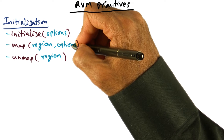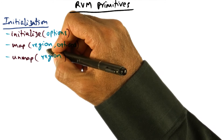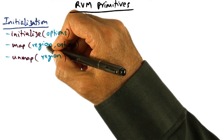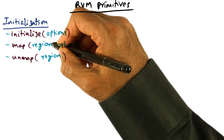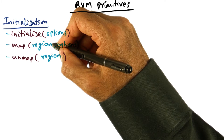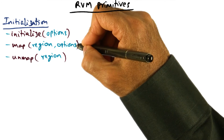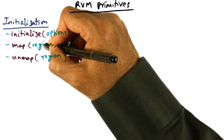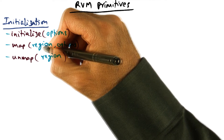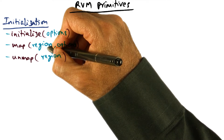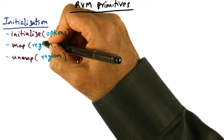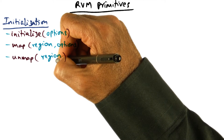The map primitive allows the application to specify what region of the virtual address space it wants mapped to an external data segment. There is a one-to-one correspondence between an address range in the virtual address space and the external data segments. If you need to map different portions of the address space to different data segments, you would execute multiple map calls. The region descriptor contains both the address range to be mapped and names the external data segment for that range. Unmap does the reverse — it decouples the address range from the external data segment it was associated with.